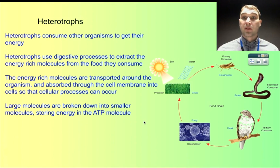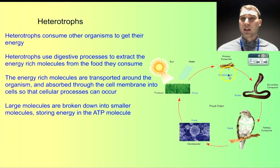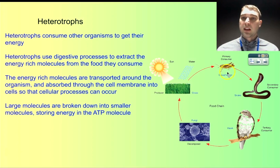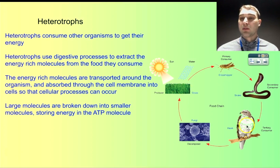Now let's talk about heterotrophs. Heterotrophs have to consume other organisms to get their energy. They can be very simple, small, single-celled organisms, but we're going to talk about animals. Here we have a food chain: the photo-autotroph is the grass, which is eaten by the grasshopper. The grasshopper gets its energy by eating the grass, then the snake gets its energy from eating the grasshopper, and the hawk gets its energy from eating the snake.